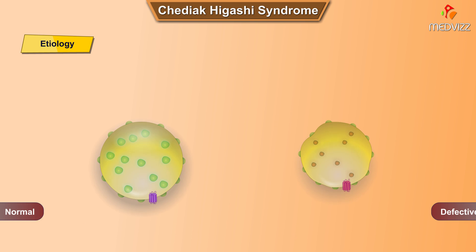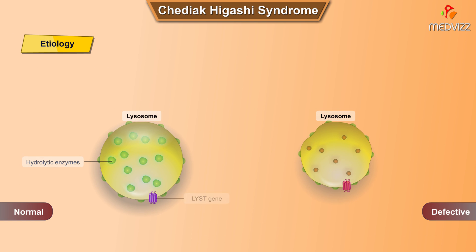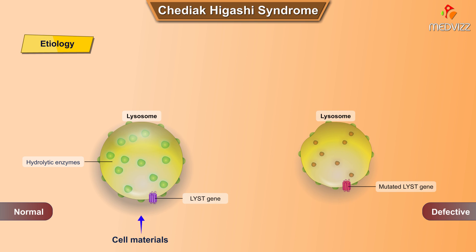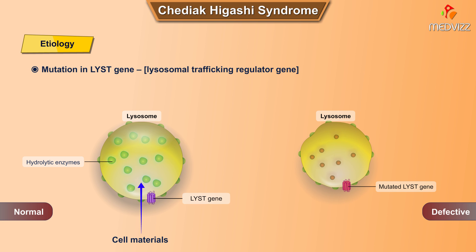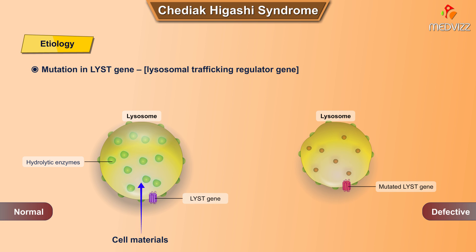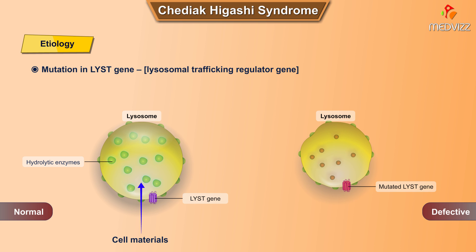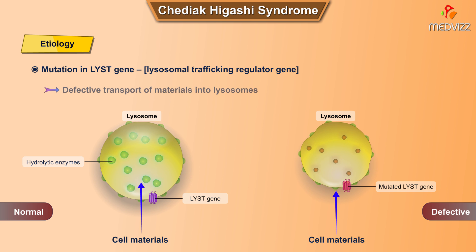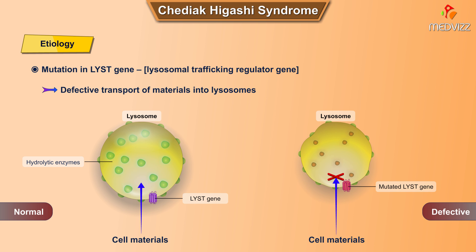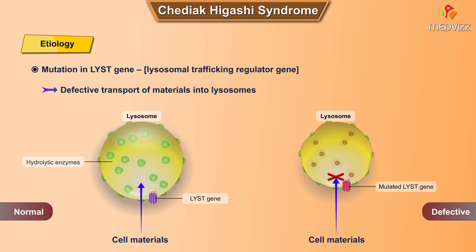Etiology. Chediak-Higashi syndrome is caused due to mutation in the LYST gene, which is the lysosomal trafficking regulator gene, resulting in defective transport of materials into lysosomes.